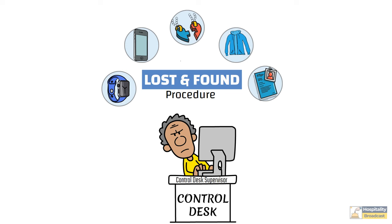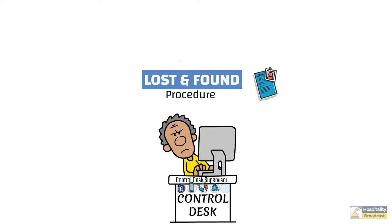When any belonging of a guest is discovered unattended anywhere in the hotel, the same is immediately notified and submitted at control desk. Then at control desk, these lost and found items are categorized into four categories.